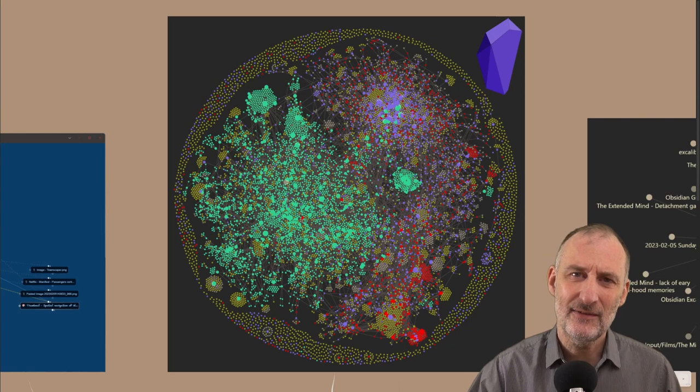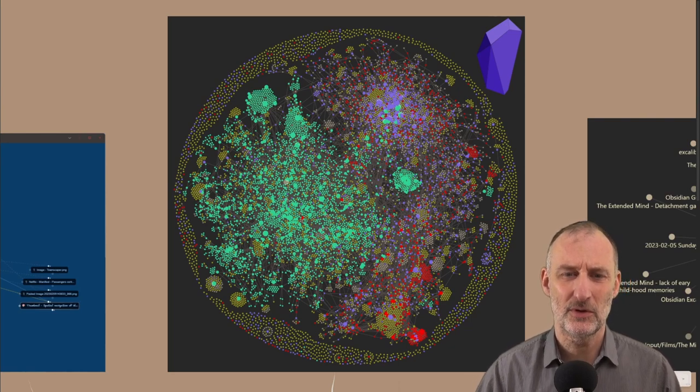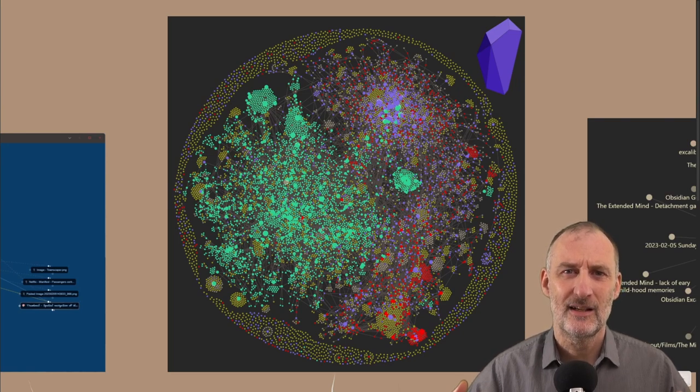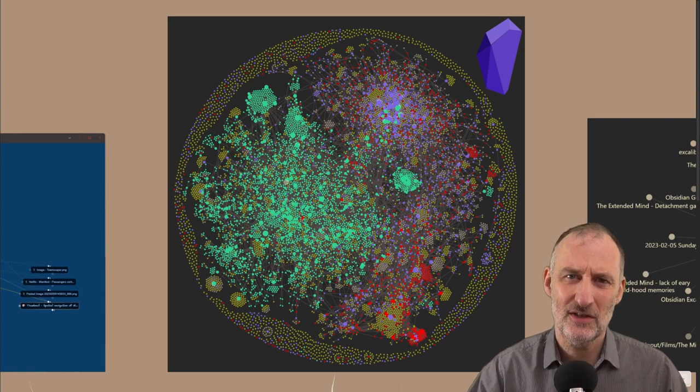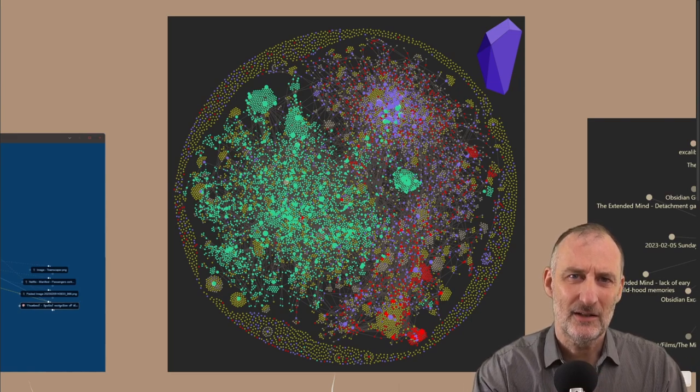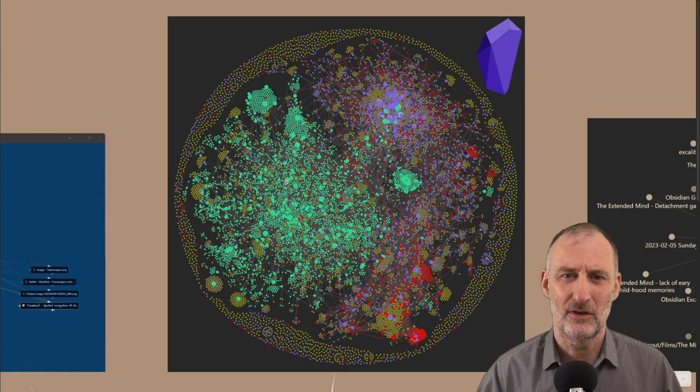And for example, what you can see here is that even though I've been using Obsidian for two years, my old notes from The Brain are still in a separate cluster. Now there are many connections with the new notes, but I can definitely see that there's a part that's green and there's a part that has a different color.